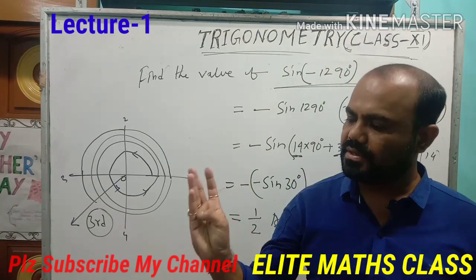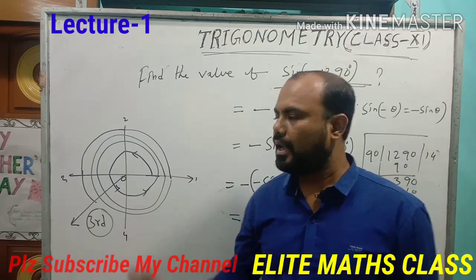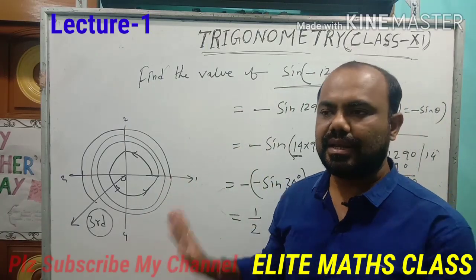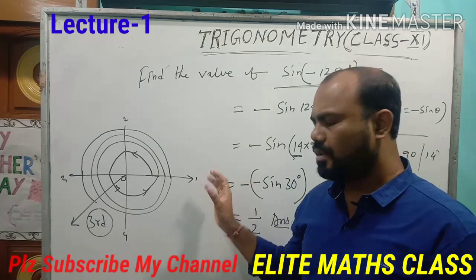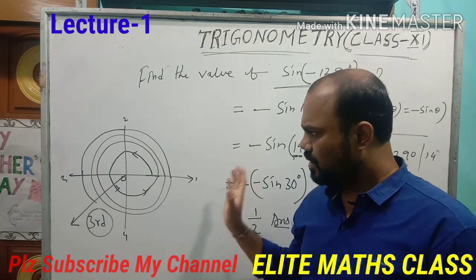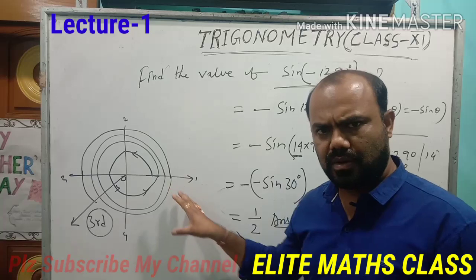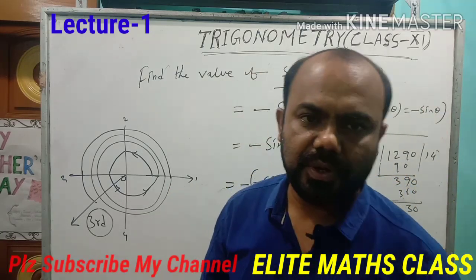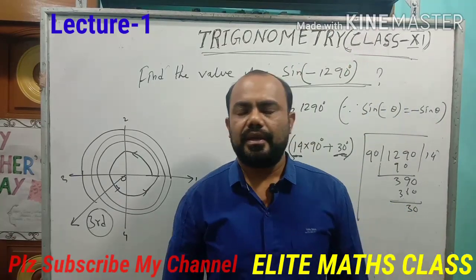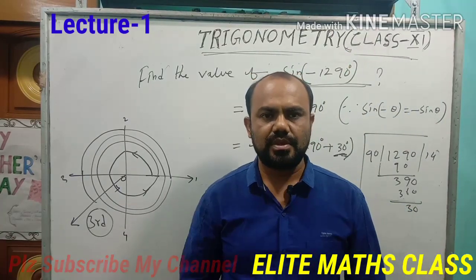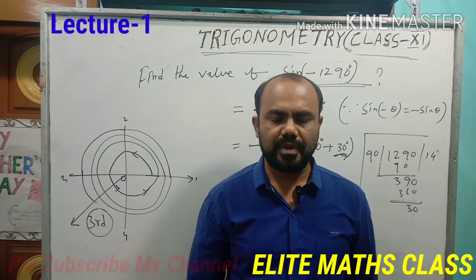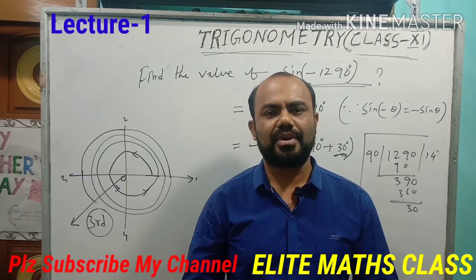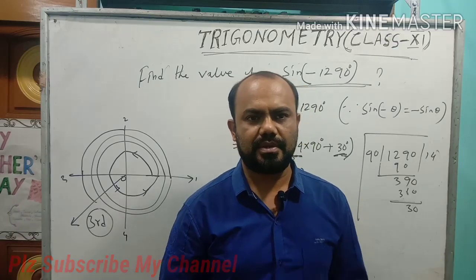So the rules and techniques are clear. First concept: positive angle and negative angle. Second: the quadrant rule. Third: how to find the value of a large angle — this is the process. Watch this two or three times, then all the process and rules will be clear to you. Hope this video was helpful for you. Please like and share my video, and don't forget to subscribe my channel, and press the bell icon to get notifications of my further videos. Thank you very much.